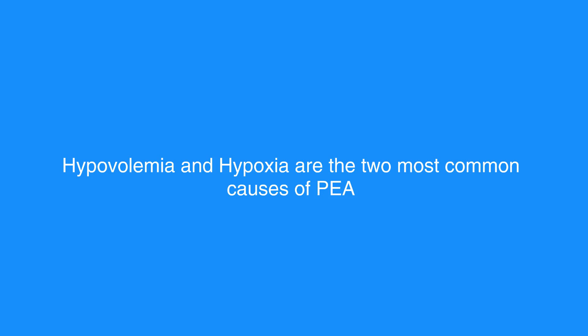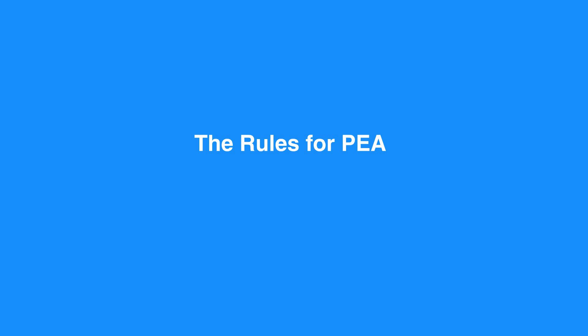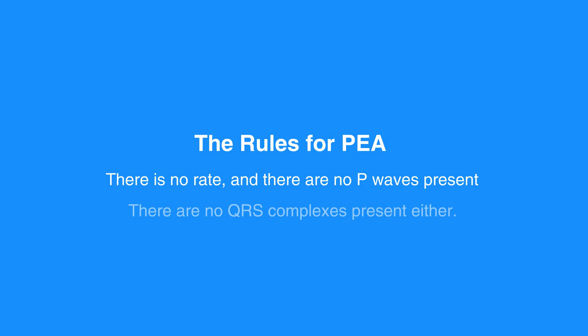Atropine is no longer recommended in cases of PEA or asystole. The rules for PEA and asystole include the rhythm as a nearly flat line. There is no rate, and there are no P waves present. The PR interval is unable to be measured due to no P waves, and there are no QRS complexes present either.